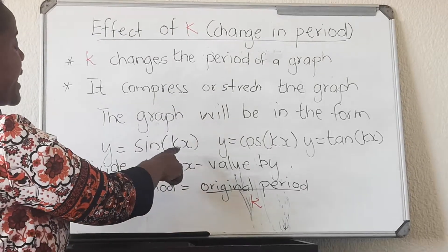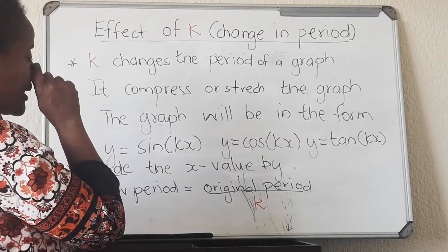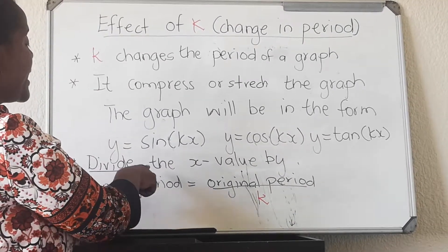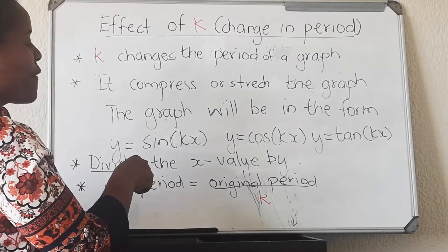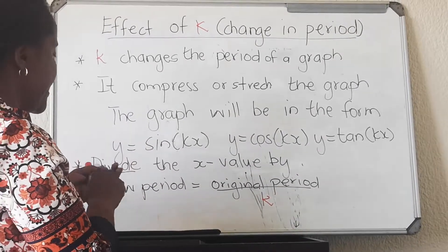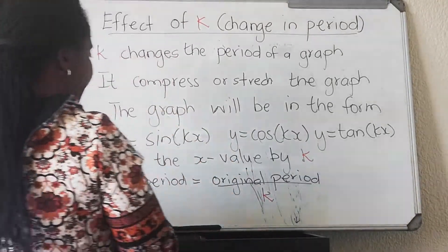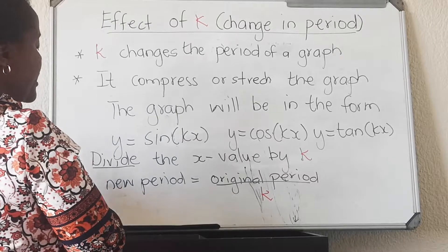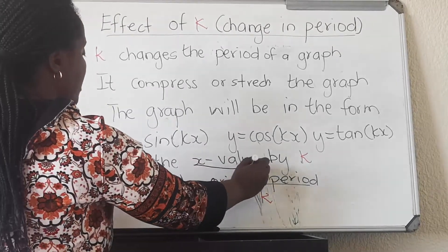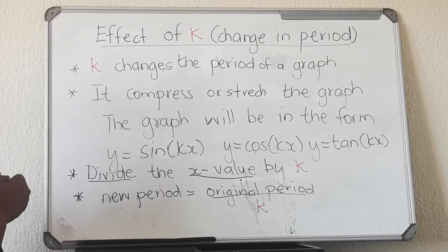The graph will be given in a form of y equals plus two sine KX, for an angle cos KX, or tan KX. To find the new x-values, you divide the x-values of the original function by K — you take every x-coordinate and divide by K to get the new function.